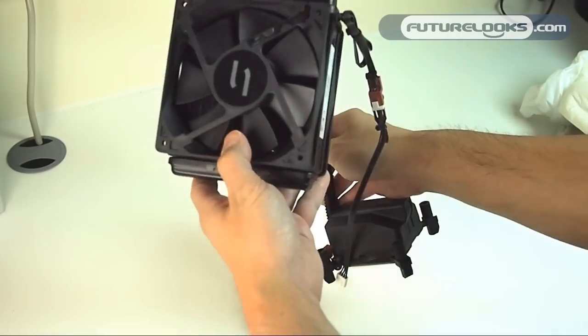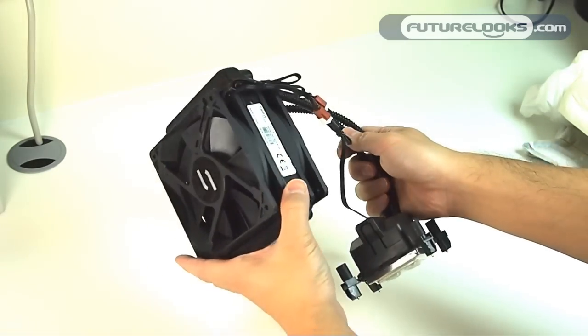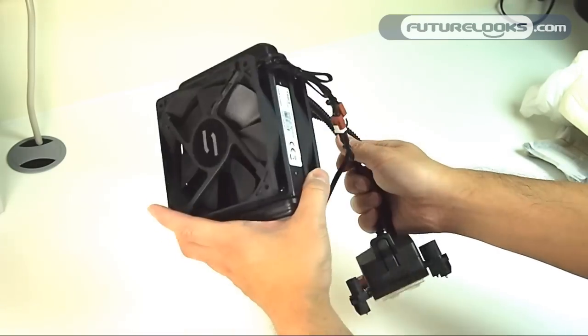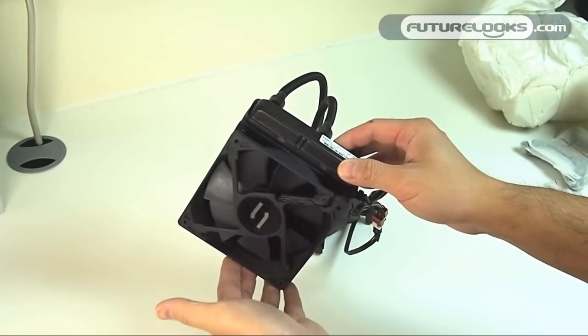So there you have it. That's what a custom Coolit solutions Eco ALC with a dual push-pull fan configuration looks like out of the box. With the additional $15, you get an extra fan, and you get a 5-degree drop in temperatures. So overall, at only $15 more than your standard Eco ALC 120, which retails for $74.99, at $89.99, you do get an impressive boost in cooling performance of about 5 degrees, and you get a fully tested system to Coolit stands behind with a 2-year warranty.